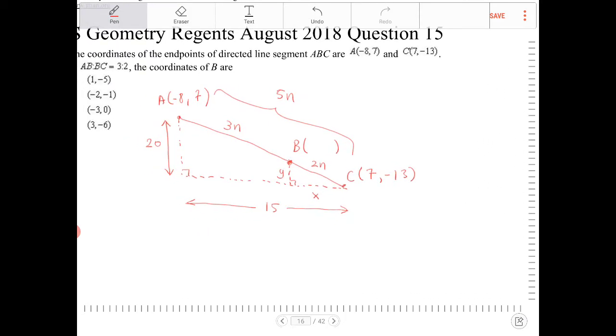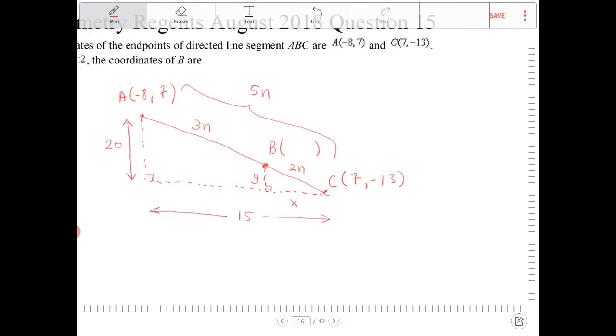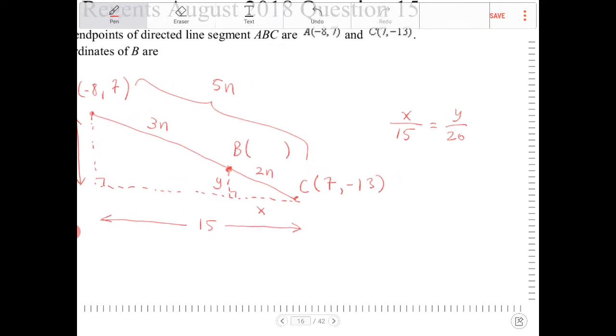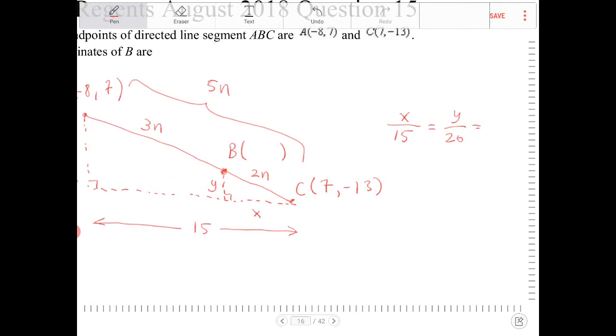So what I do know is this, that the small triangle and the big triangle are similar, so I can set up a proportion to determine the values of x and y. So I know x to 15 will equal y to 20.